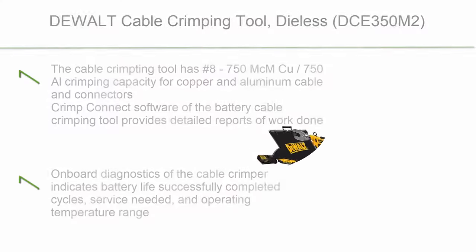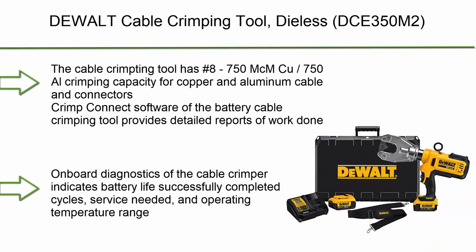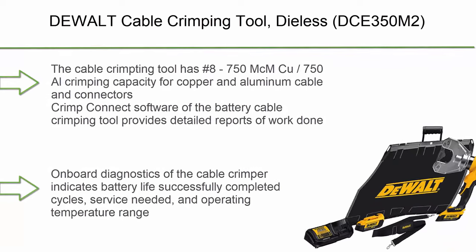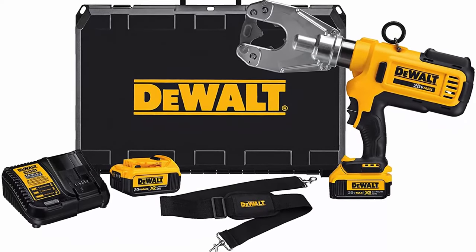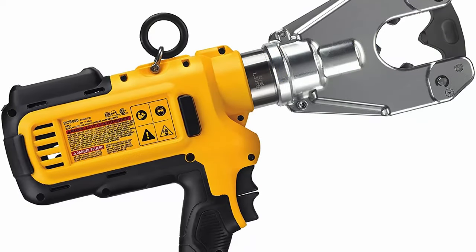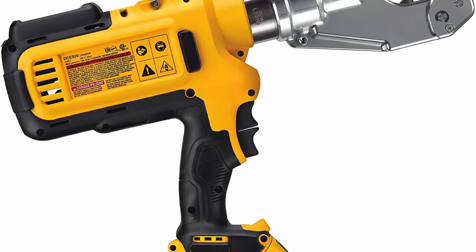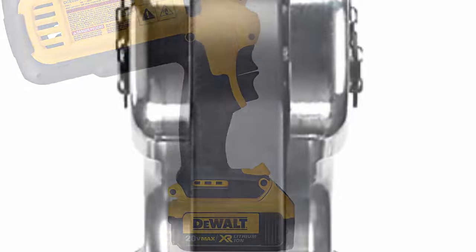Top 2: DeWalt Cable Crimping Tool, Dialess, DC350M2. The cable crimping tool has No. 8-750 MCM/750L crimping capacity for copper and aluminum cable and connectors. Crimp Connect software provides detailed reports of work done.